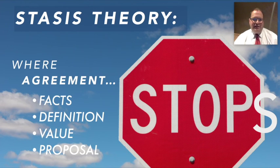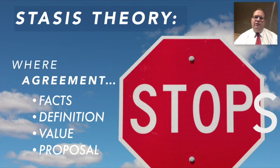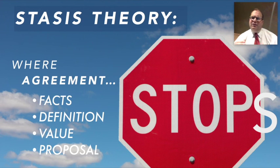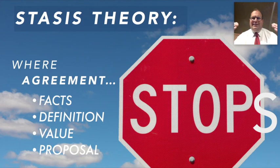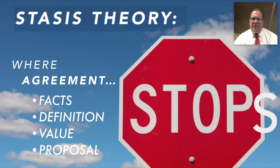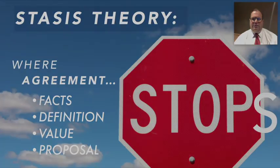That's stasis theory — pretty simple, pretty straightforward. Give it a try. Take the issue you're wrestling with for this course and see what you can come up with in terms of where in the process agreement stops between you and your audience. At that level, that's where you engage your audience and you can now tackle the issue.